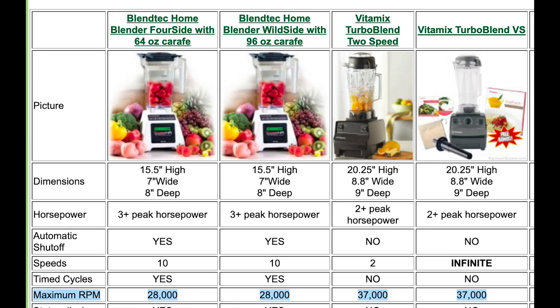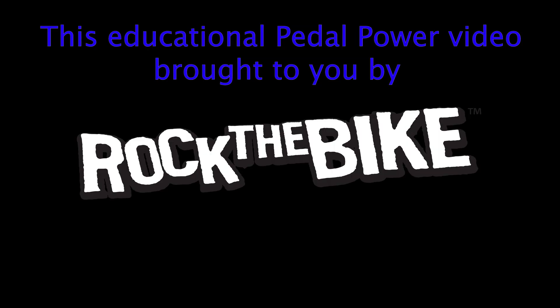I went back inside and searched the web, and found a comparison on discountjuicers.com showing that blade speeds on various blenders are between 20,000 and 40,000 RPM. It feels like we nailed it — it makes sense that an electric blender might be a little faster than a pedal-powered blender. We were in the right ballpark, and that's a good feeling. That's a powerful example of estimating.